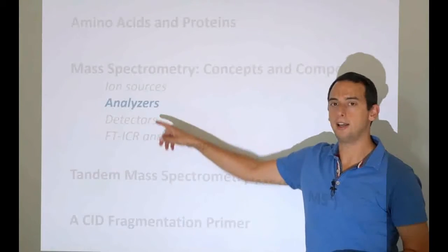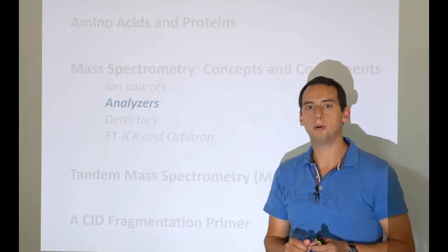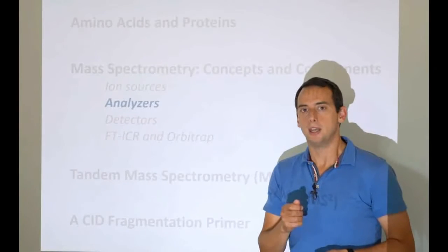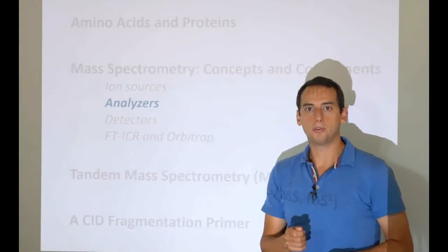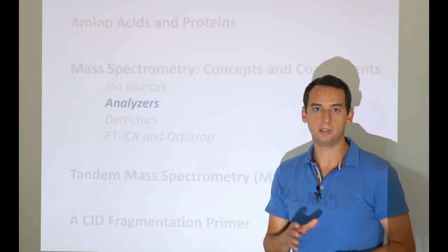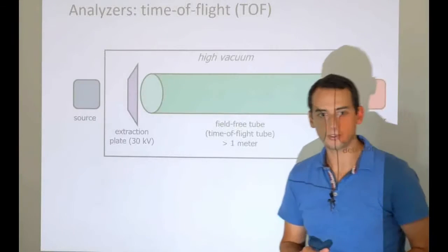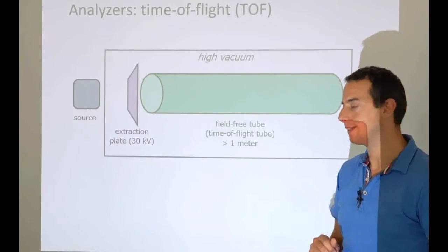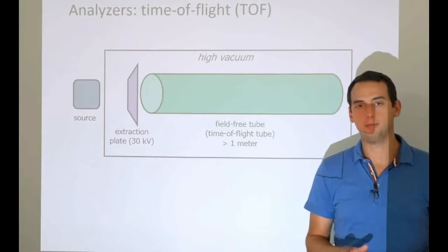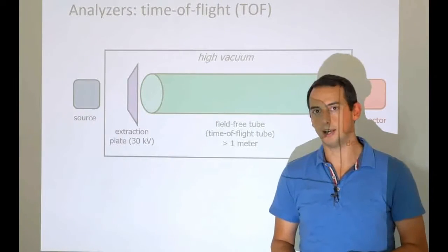We are at the mass analyzers. These are very sophisticated scales that will find out how much mass a particular molecule has. They use electrical fields, and we'll see throughout the presentation how these electrical fields are used in different ways to measure mass. Let's start with our first type of mass analyzer: the time of flight. It's a very descriptive name because it's going to be all about timing the time of flight of a particular ion.